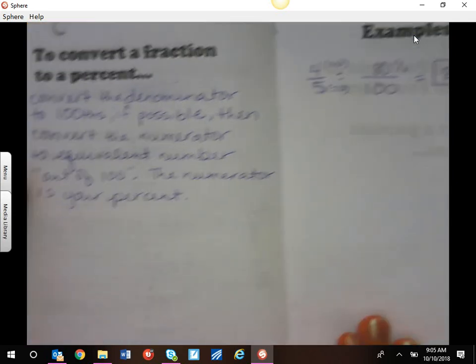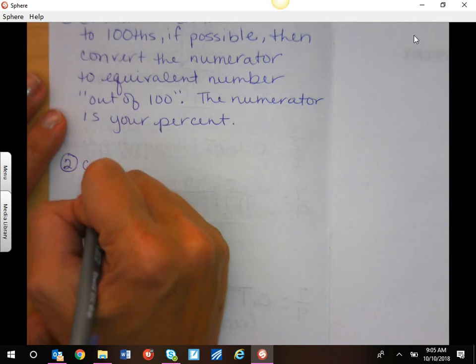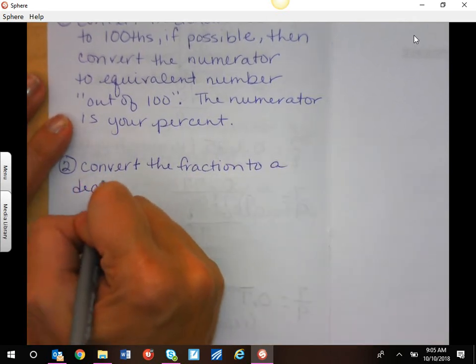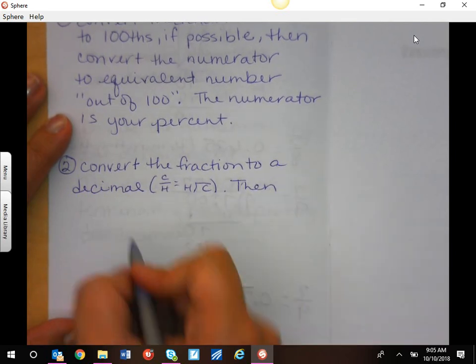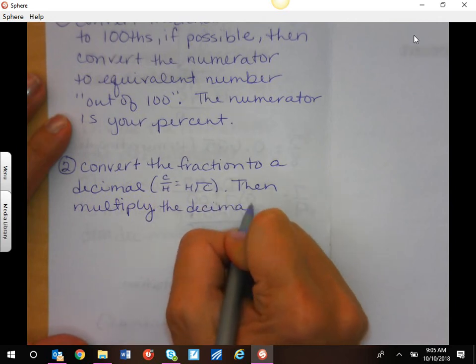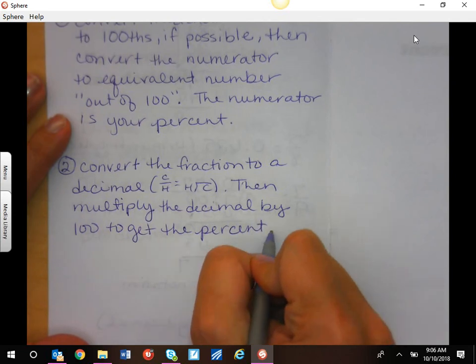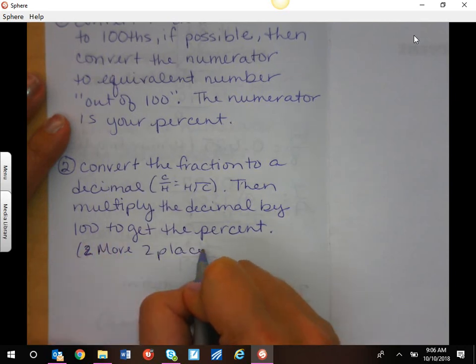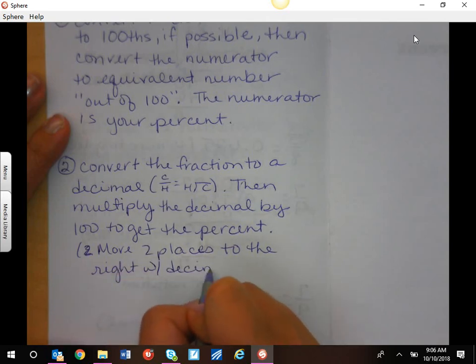Now sometimes it doesn't work out super pretty like that. If it doesn't work out really pretty like that, then your other method is going to have two steps. You're going to convert the fraction to a decimal, which we just talked about on the previous page, using your cowboy horse. Then you're going to multiply the decimal by 100 to get the percent, because again, that means out of 100. The shortcut for that is to move two places to the right. Here's a decimal. I'm going to show you a decimal example of that.